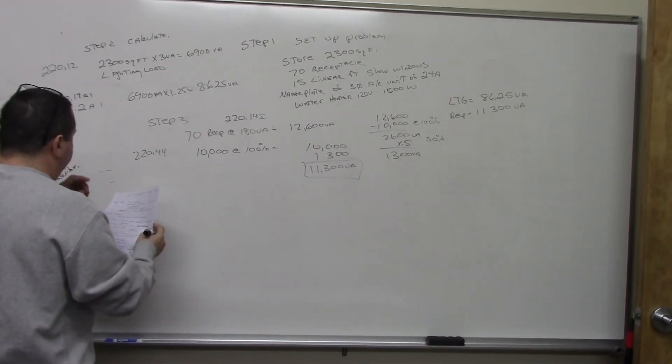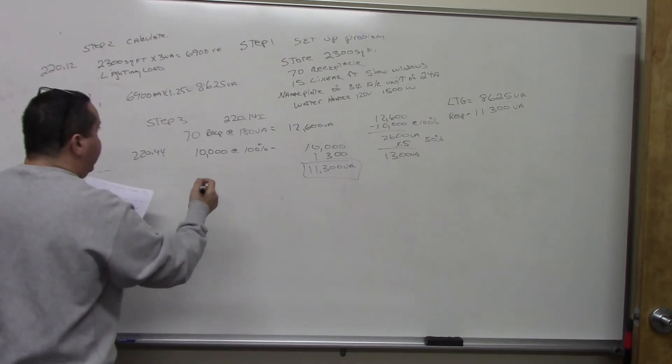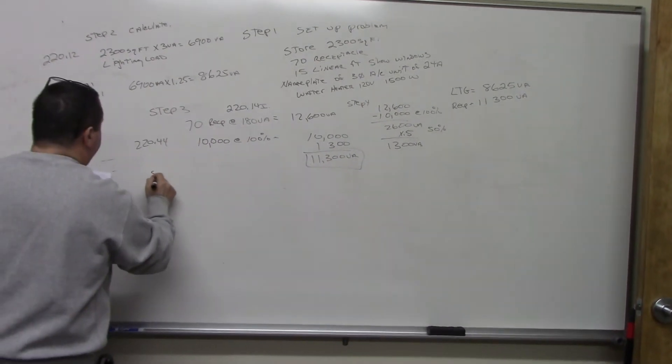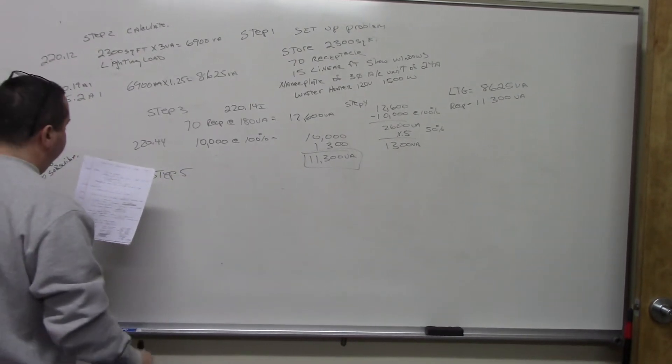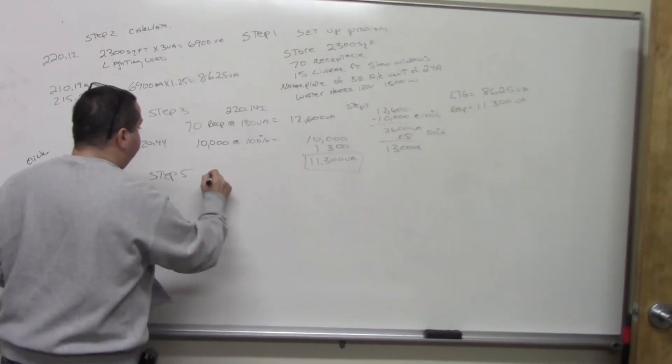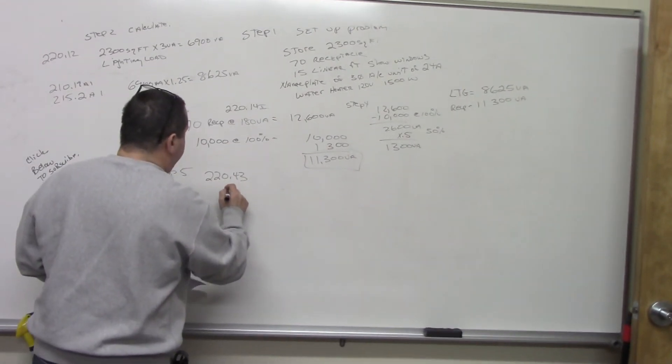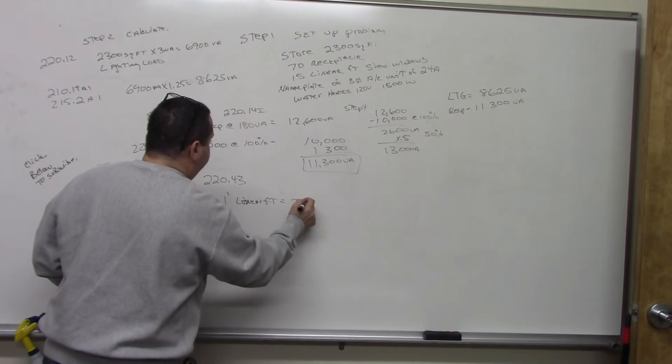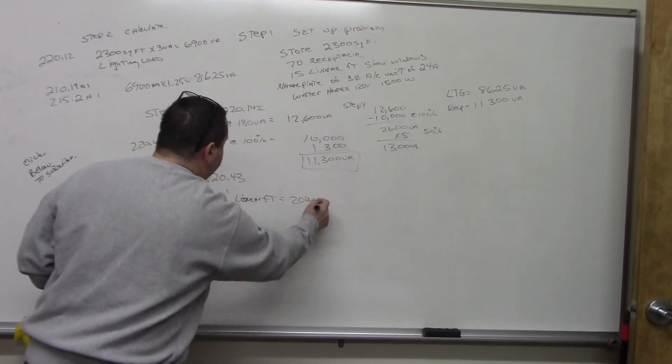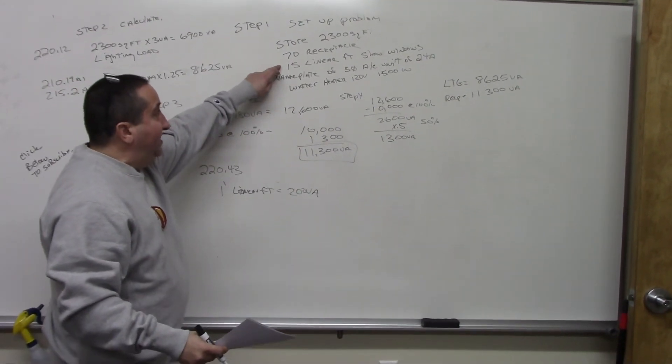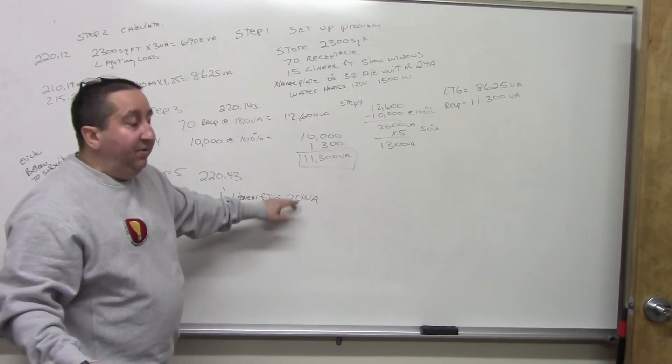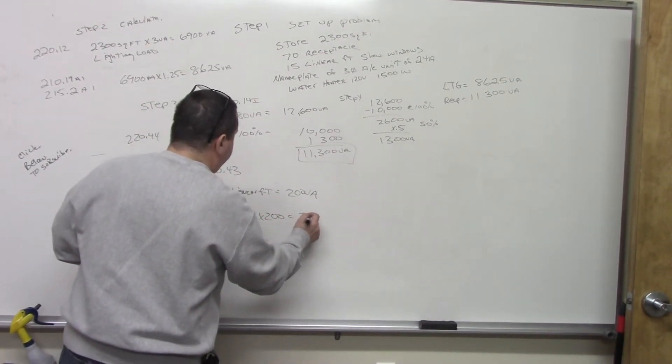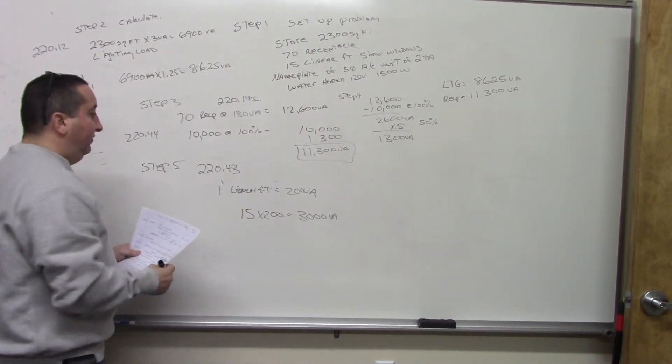Step five is going to be the show windows. And for the showroom windows, we're going to go to 220.43. And what it says here, for every one linear foot, which equals 200 volt amps. So, if I add 10 linear feet, we take 10 times 200, which would be 2,000. But here we got 15 linear feet. So, we're going to take 15 times 200, which equals 3,000 volt amps. Very simple.